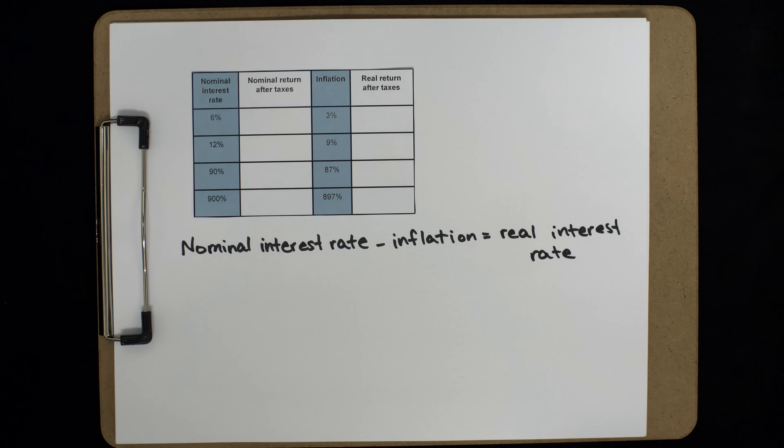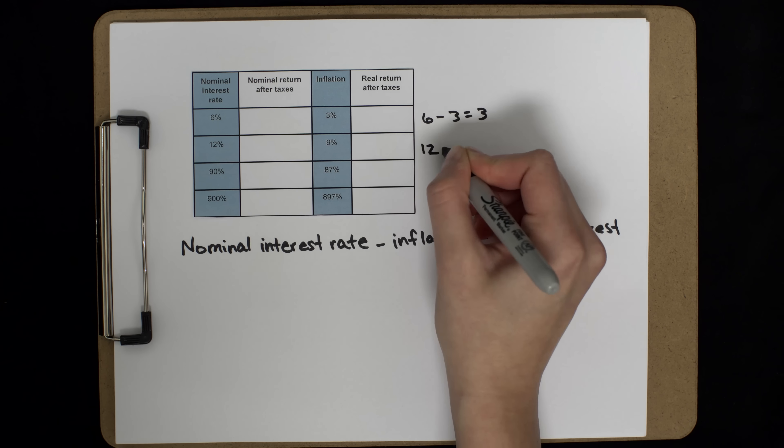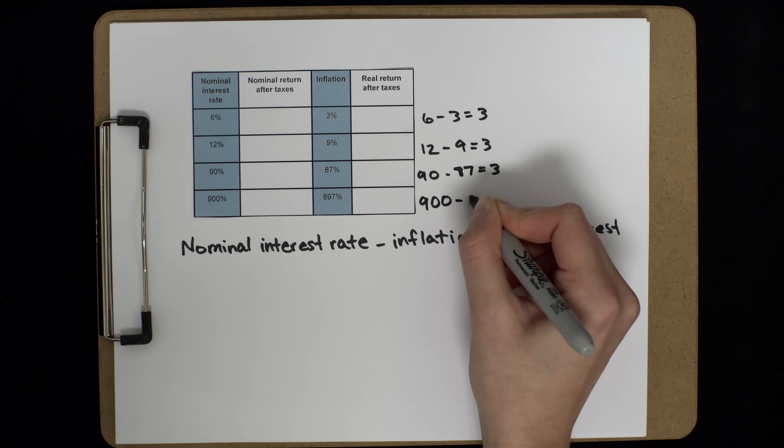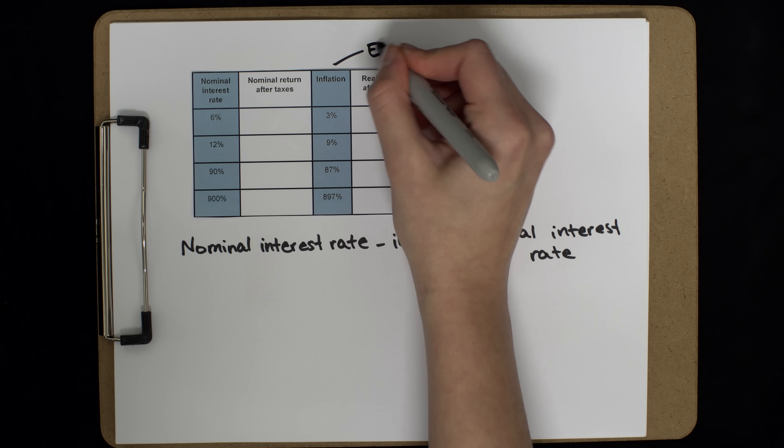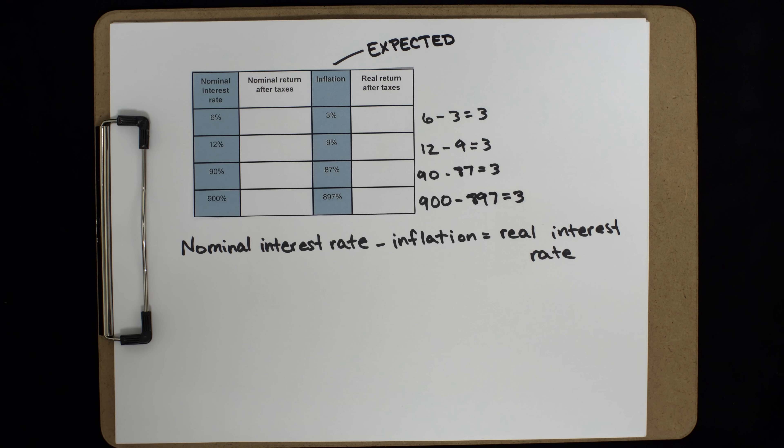In each of these cases, the nominal interest rate has actually adjusted for inflation, such that the real interest rate before taxes is 3%. In other words, inflation is expected. No surprises here. The real interest rate after taxes, though, which we'll calculate, differs from case to case.